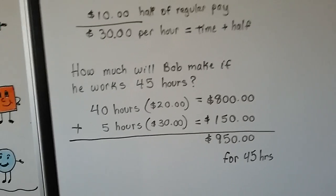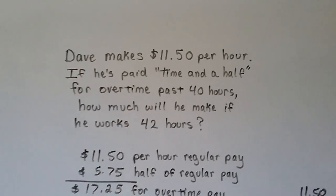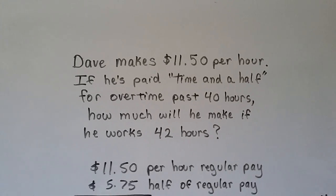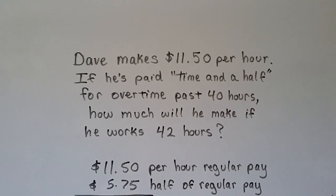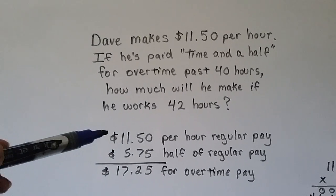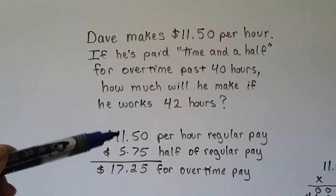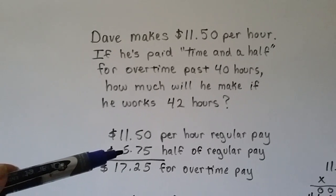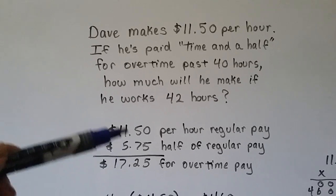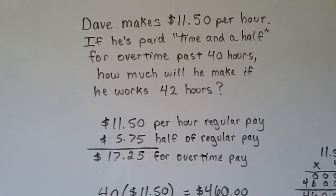We add these together and he'll make $950 for 45 hours. That's not too hard, is it? Let's try it again. Dave makes $11.50 per hour. If he's paid time and a half for overtime past 40 hours, how much will he make if he works 42 hours? $11.50 is how much he makes for his regular pay. Half of this is $5.75 — that's half of his regular hourly pay. We add them together to get a time and a half rate of $17.25.